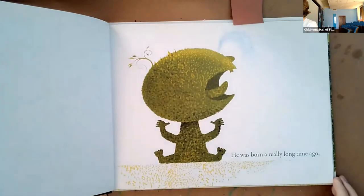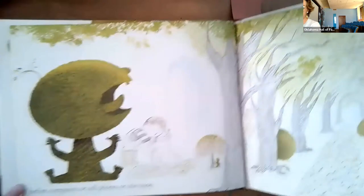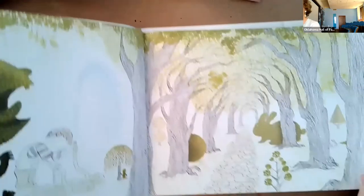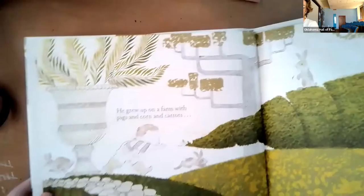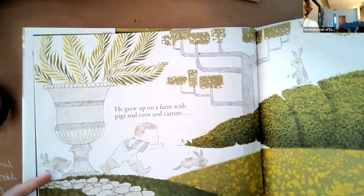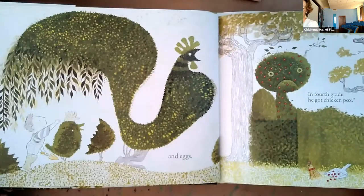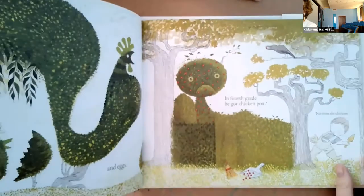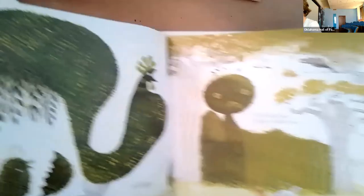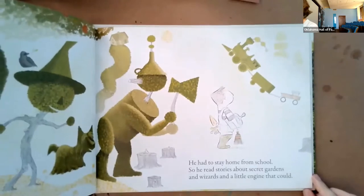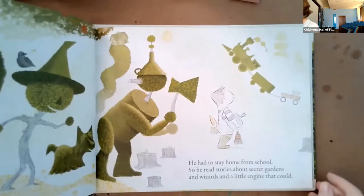And so Grandpa Green by Lane Smith. He was born a really long time ago, before computers or cell phones or television. He grew up on a farm with pigs and corn and carrots and eggs. In fourth grade, he got chicken pox, not from chicken soup. He had to stay home from school, so he read stories about secret gardens and wizards and a little engine.